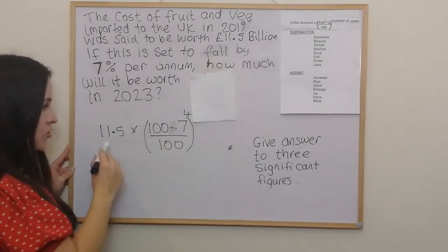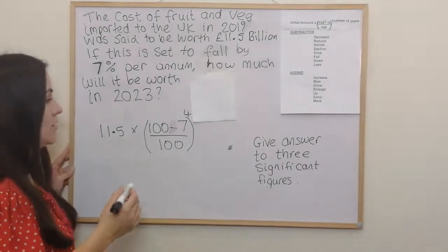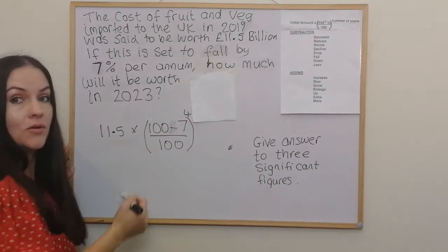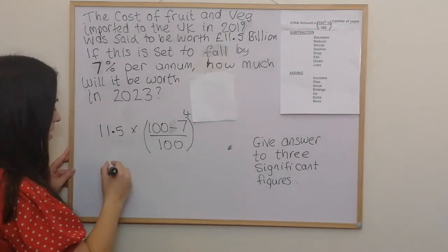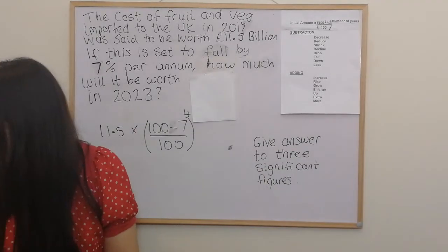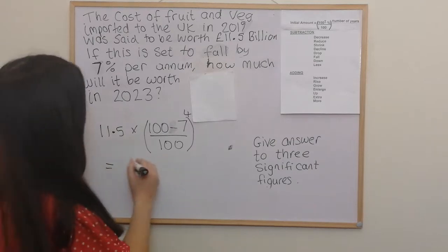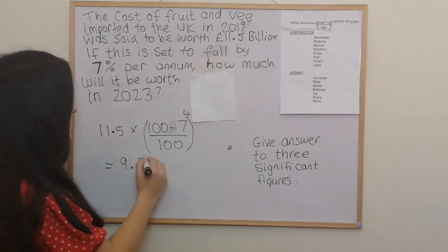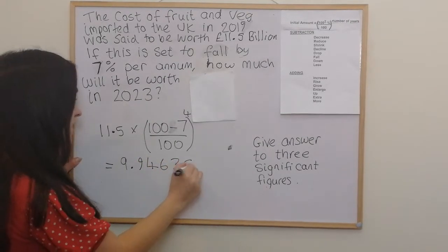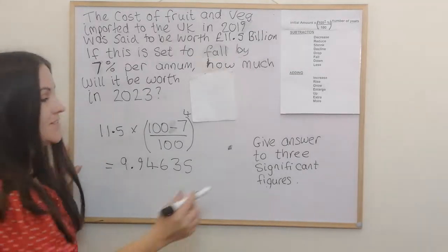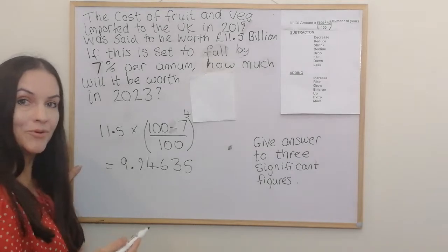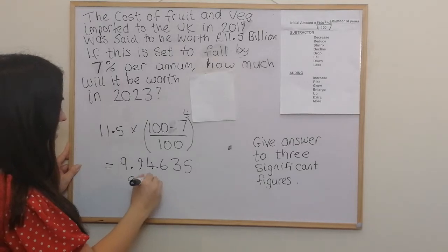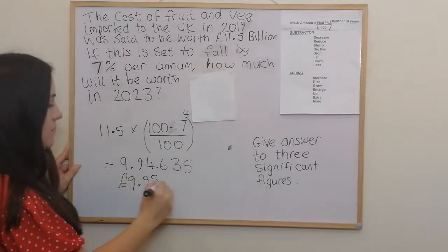As mentioned before, you can usually type that in one go on a Casio calculator. Some people might prefer to work out that part first and then write the full calculation out — either way is fine. When we put that into the calculator, we get 9.9465. Rounded to three significant figures, as that's typically what you'll be asked in a question, it would be 9.95 — that's £9.95 billion.